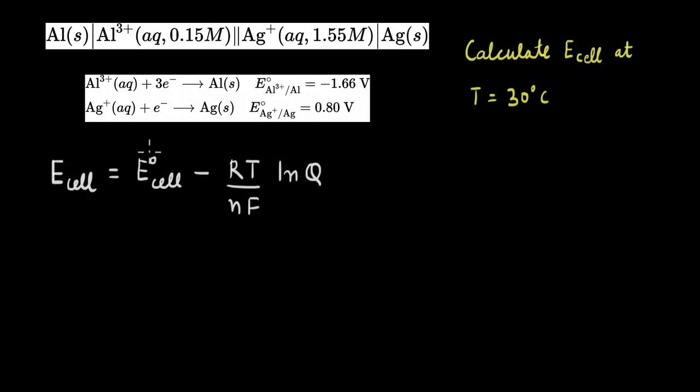To calculate the cell potential at 30 degree Celsius, first we need to calculate the standard cell potential. We know that the standard cell potential is given as the E naught of cathode minus the E naught of anode, which we know from here, because this galvanic cell is written in alphabetical order. We know that this is the anode, this is the bridge, and this is the cathode.